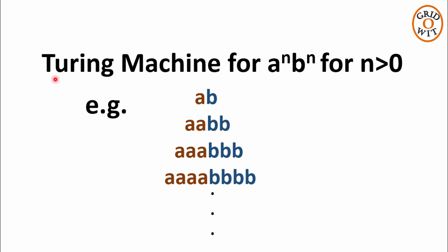Hello everyone. In this lecture we will design a Turing machine for accepting all strings of the form a^n b^n, for all n greater than 0.